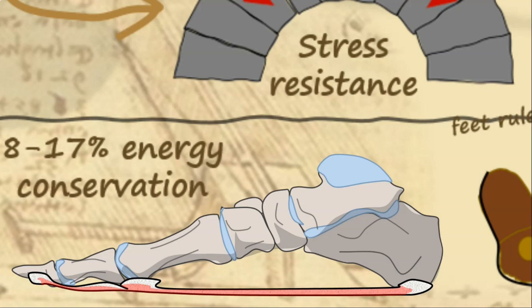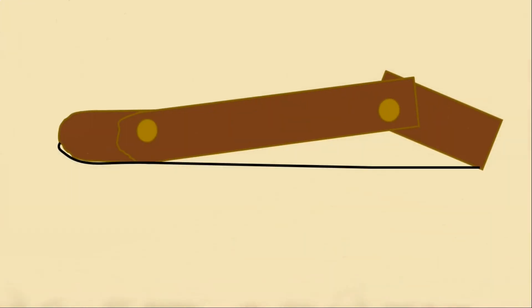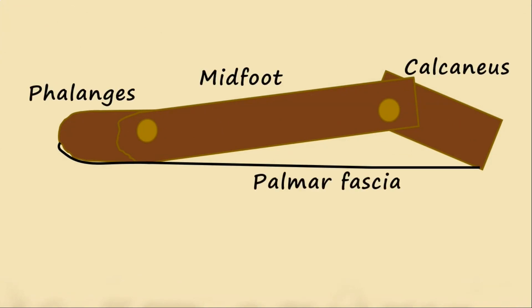A great example of how this works is using the combined truss and windlass analogy. At rest, the plantar fascia is relatively loose.